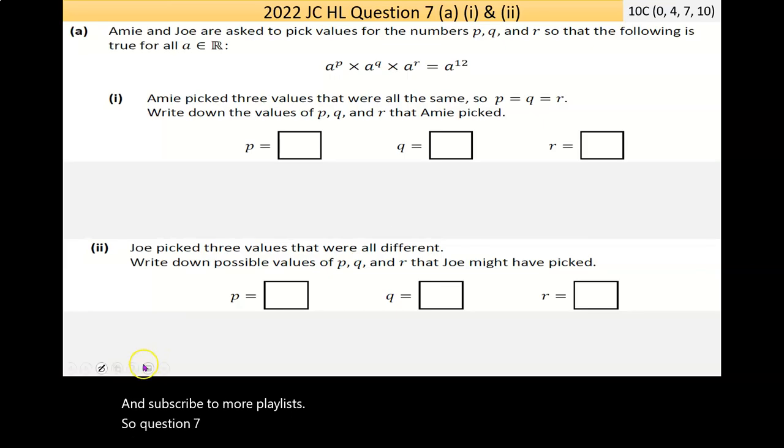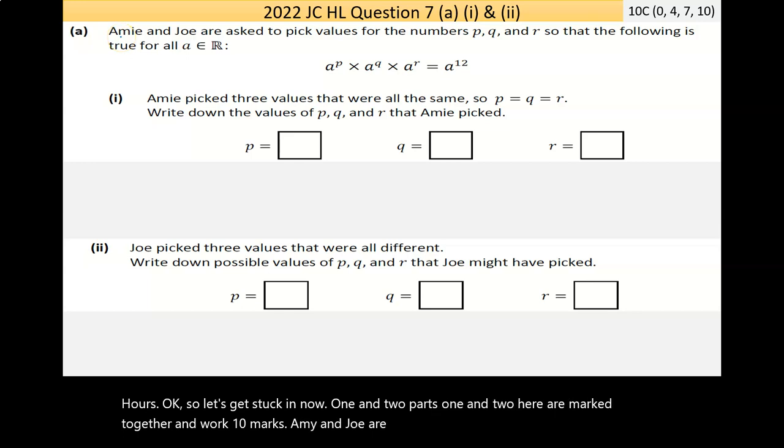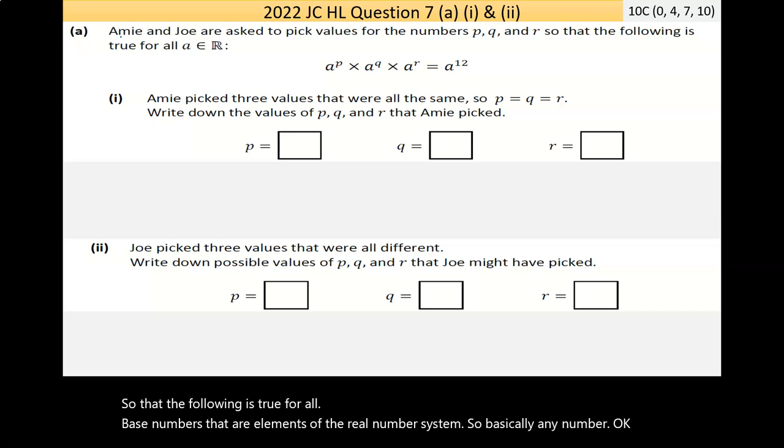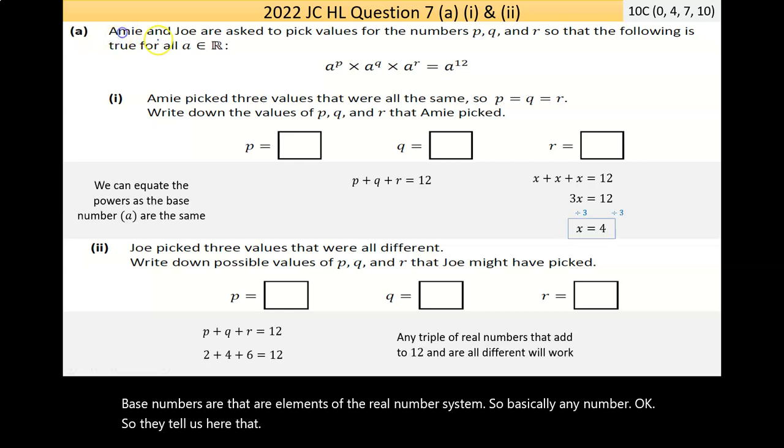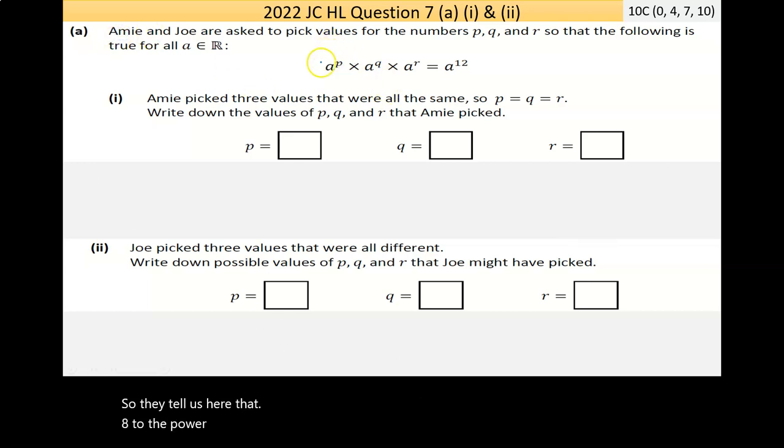So question 7 is about powers. Now, parts 1 and 2 here are marked together and worth 10 marks. Amy and Joe are asked to pick values for the numbers P, Q, and R so that the following is true for all base numbers that are elements of the real number system. So basically any number. They tell us here that A to the power of P times A to the power of Q times A to the power of R is equal to A to the power of 12.